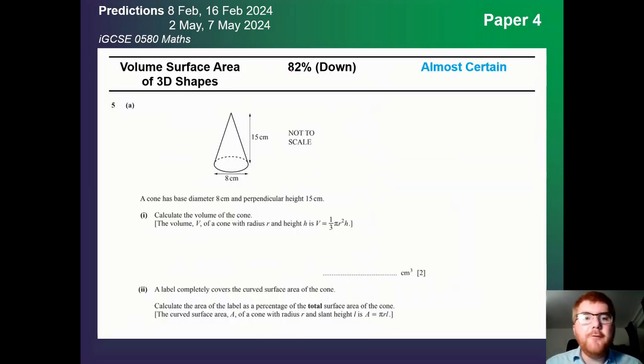On to paper 4 here. So first of all, very common topic, volume, surface area, or 3D shapes. Slightly down at 82%, but very frequent on the paper 4. Here's a very nice example question. Be aware on 2024 papers, they give you the formula that you would need to use for the questions. So they prompt you with that formula. That will change slightly in 2025.